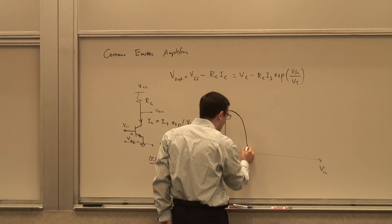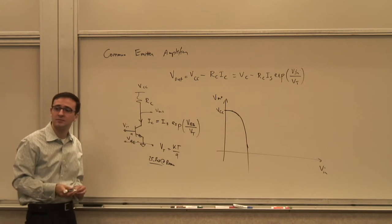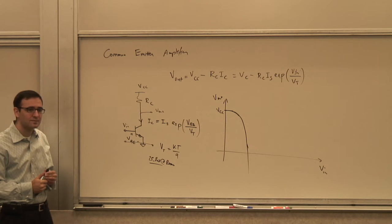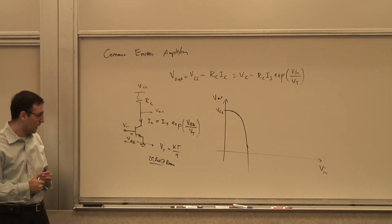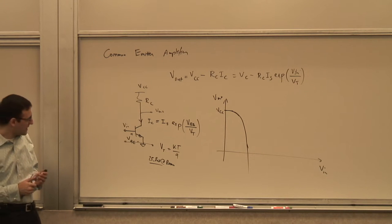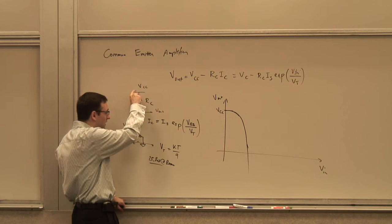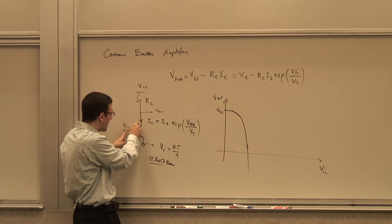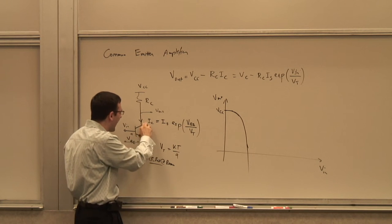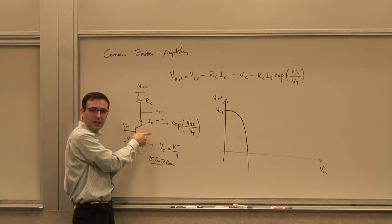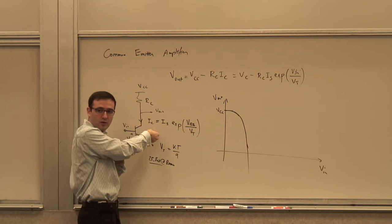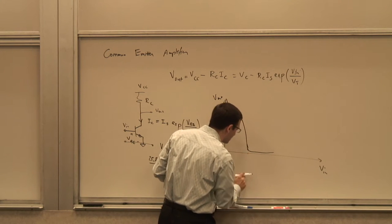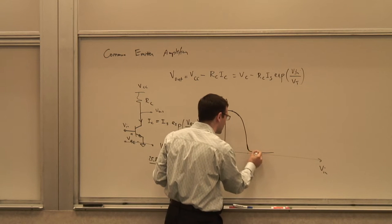Would the output go negative? No. Before that, as Vout drops below about 0.5–0.6 V above the base voltage, the collector-base junction becomes forward-biased and the transistor enters saturation. In saturation, VCE is like a very small battery — about 0.1 to 0.2 volts — so Vout hits Vsat instead of going to zero.